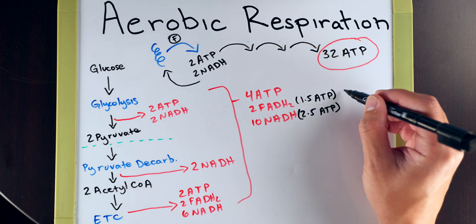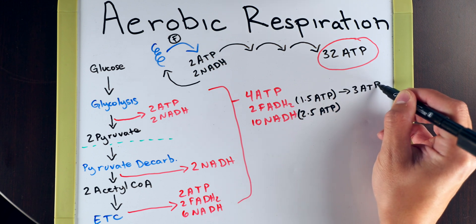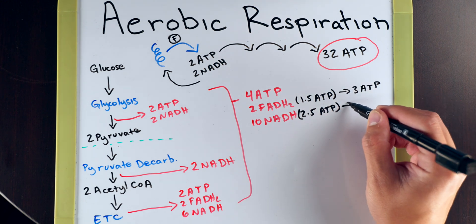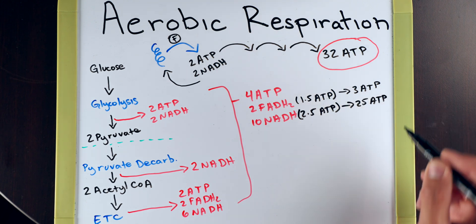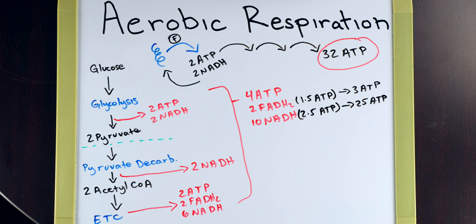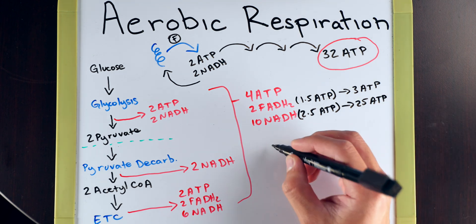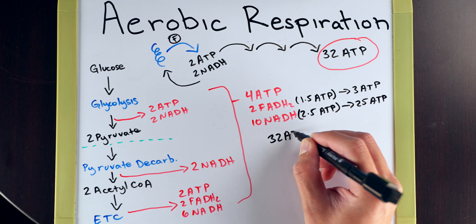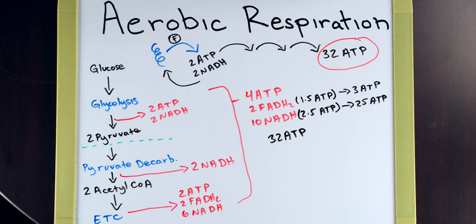So, this comes out to three ATP, and this comes out to 25 ATP. So, no need to whip out your calculators. It's just simple addition. Four plus five, 29 plus three is 32. And that's how we get 32 ATP.